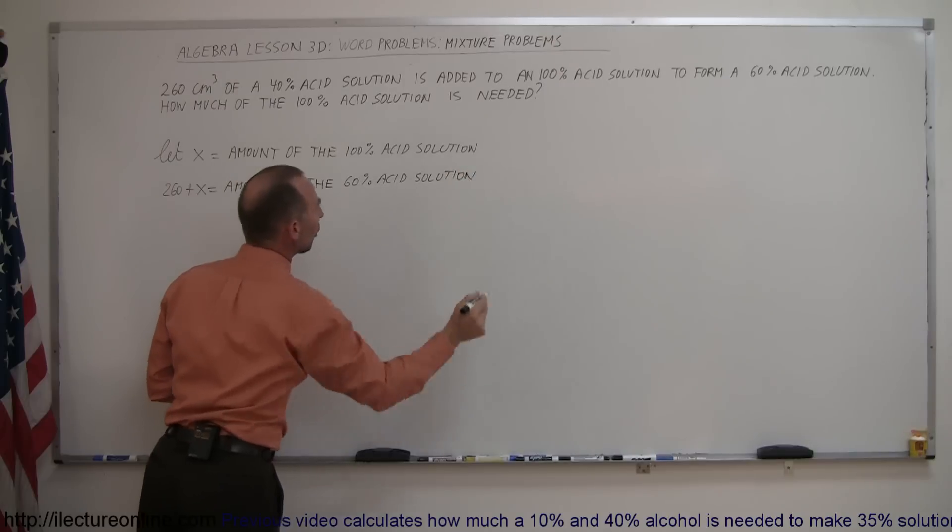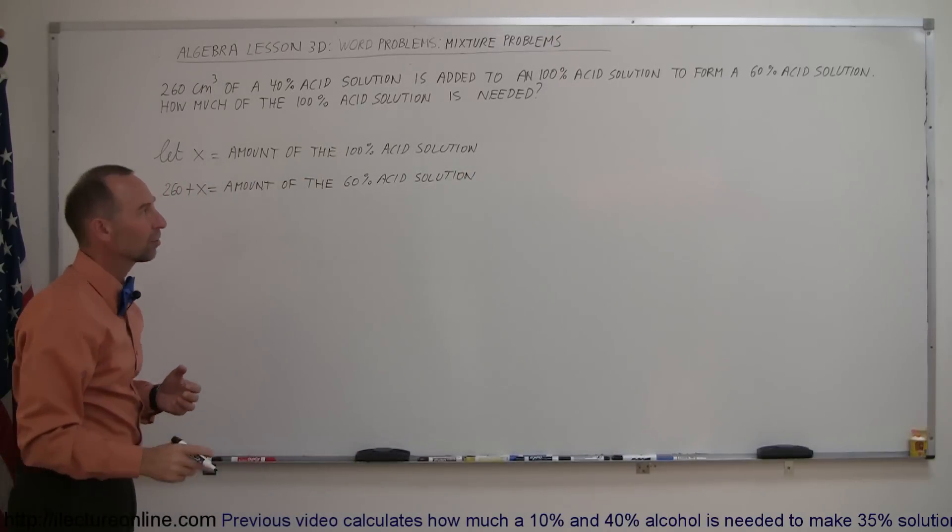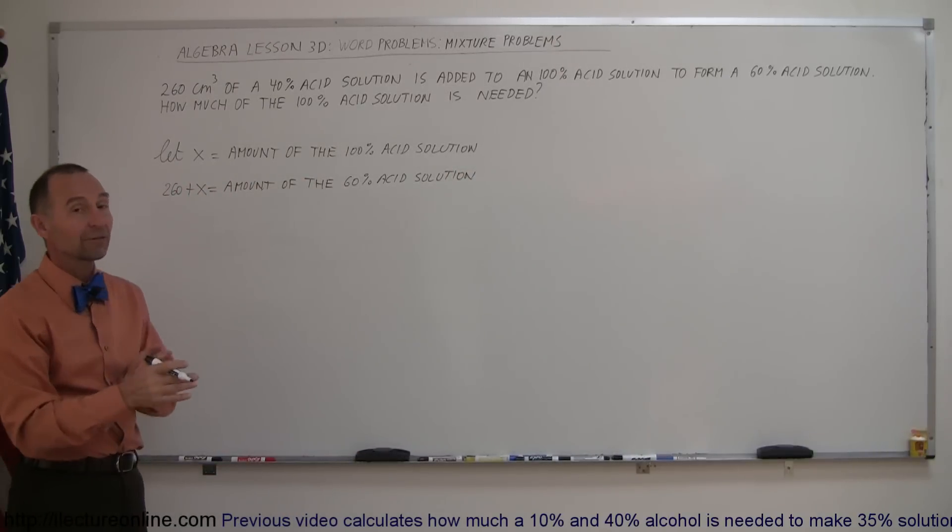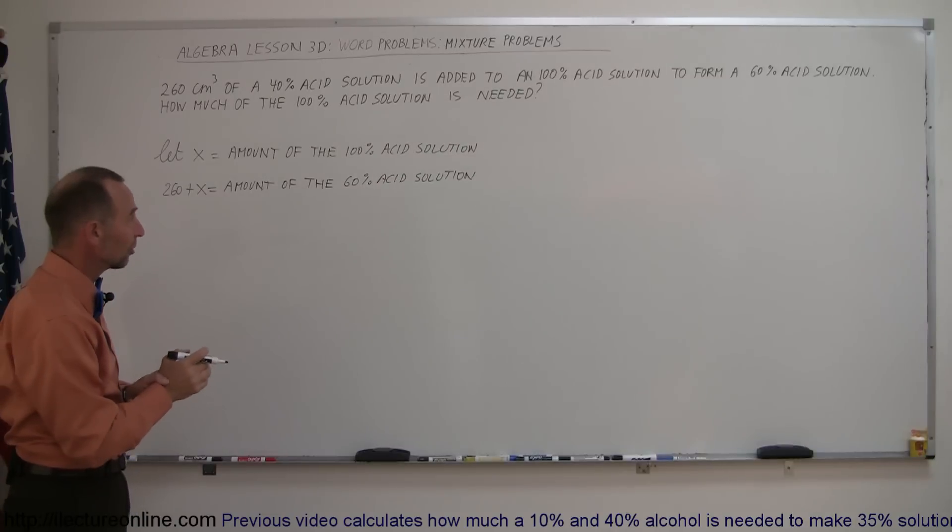So now we have the two unknowns, the amount of the acid solution that's 100%, plus the amount of final acid solution, which is 60% in terms of X. So now we can go ahead and solve the problem.